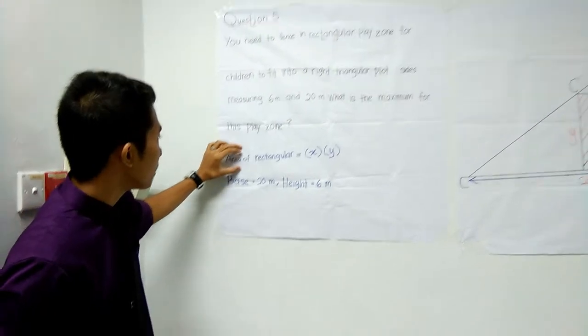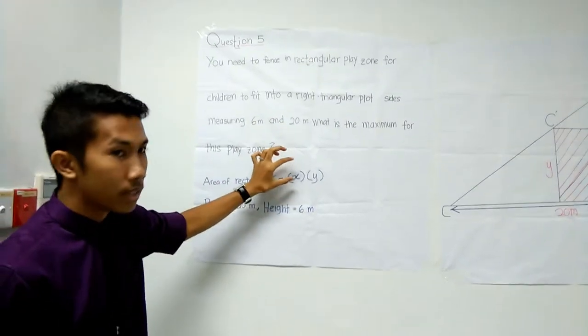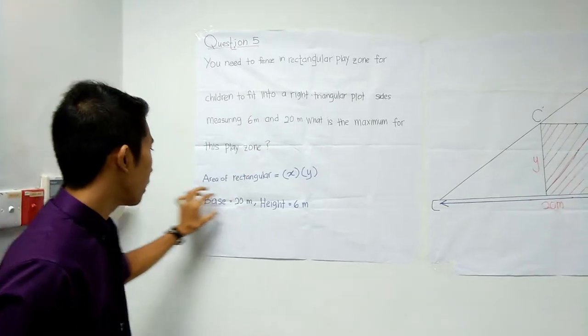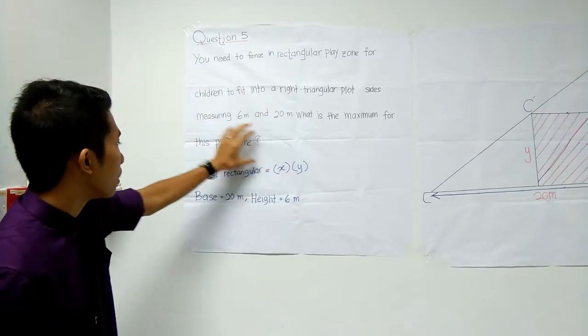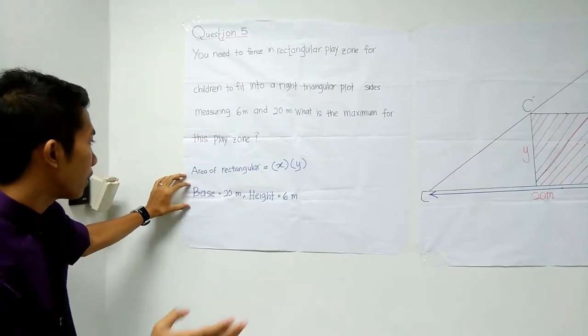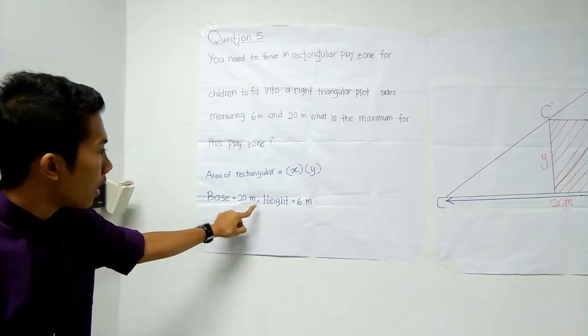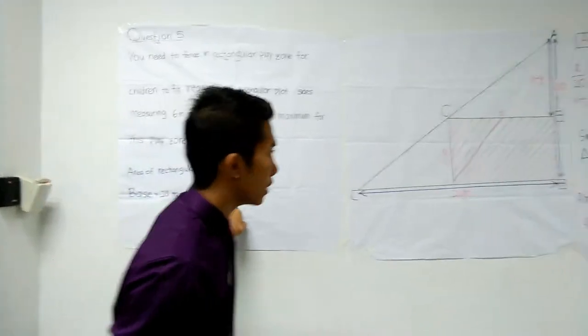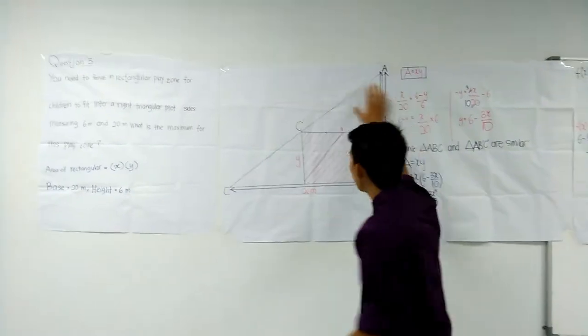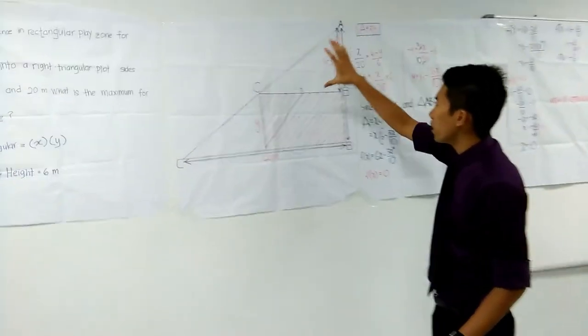The formula for the rectangular area is X times Y. From the formation, I will put out and then the base is 20 meters and the height is 6 meters. And this is the picture that I created.